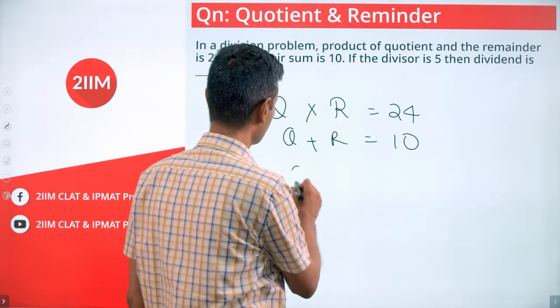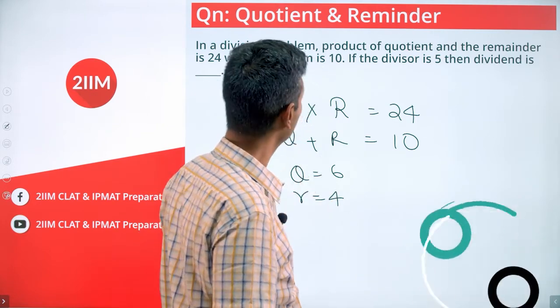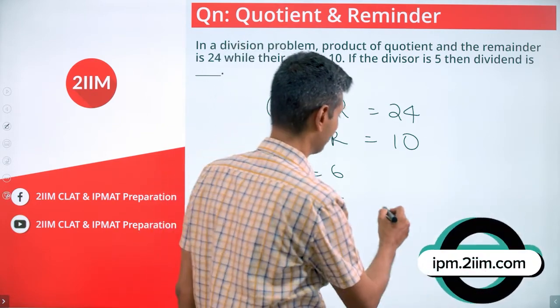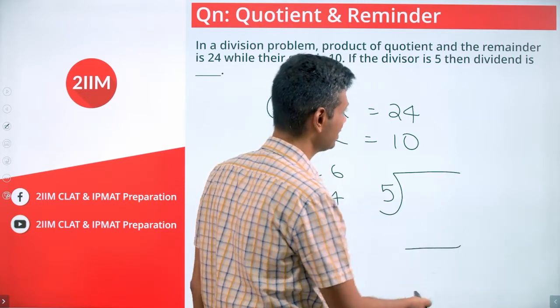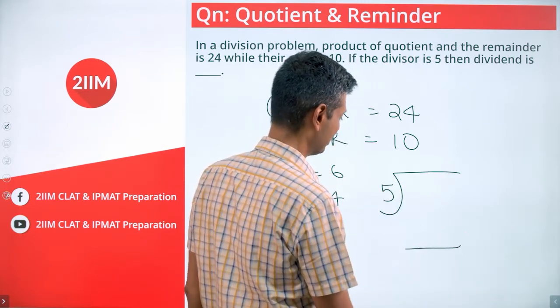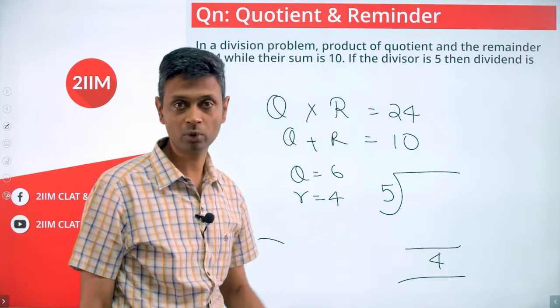So, either quotient is 6 and remainder is 4 or the other way around. We're told the divisor is 5. We are dividing by 5. Obviously straight away, if we are dividing by 5, the remainder cannot be 6. The remainder has to be 4.